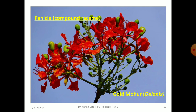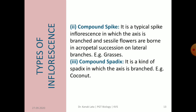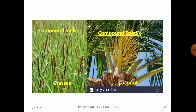The next compound racemose inflorescence is compound spike. It is a typical spike inflorescence in which the floral axis is branched and sessile flowers are present in acropetal succession on lateral branches. For example, this type is seen in grasses. Another compound inflorescence is compound spadix, a kind of spadix in which the axis is branched and it is commonly seen in coconut. In the given figure, you can observe compound spike and compound spadix.